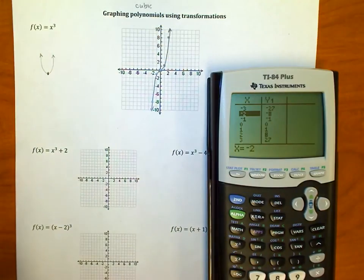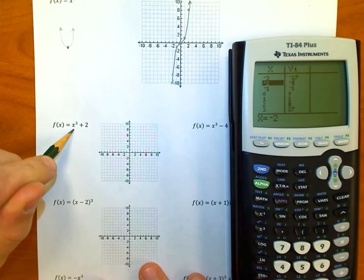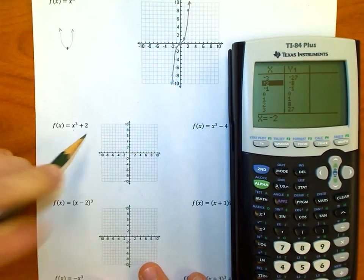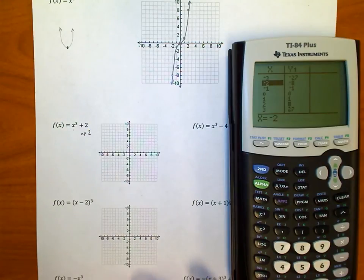So we're going to slide this thing around using transformations, and it's going to be the same rules that applied to parabolas earlier. For instance, that's x cubed but I've added 2 off to the end. You know what that does—that moves it up 2, just like it did with parabolas when we did x squared plus 2.